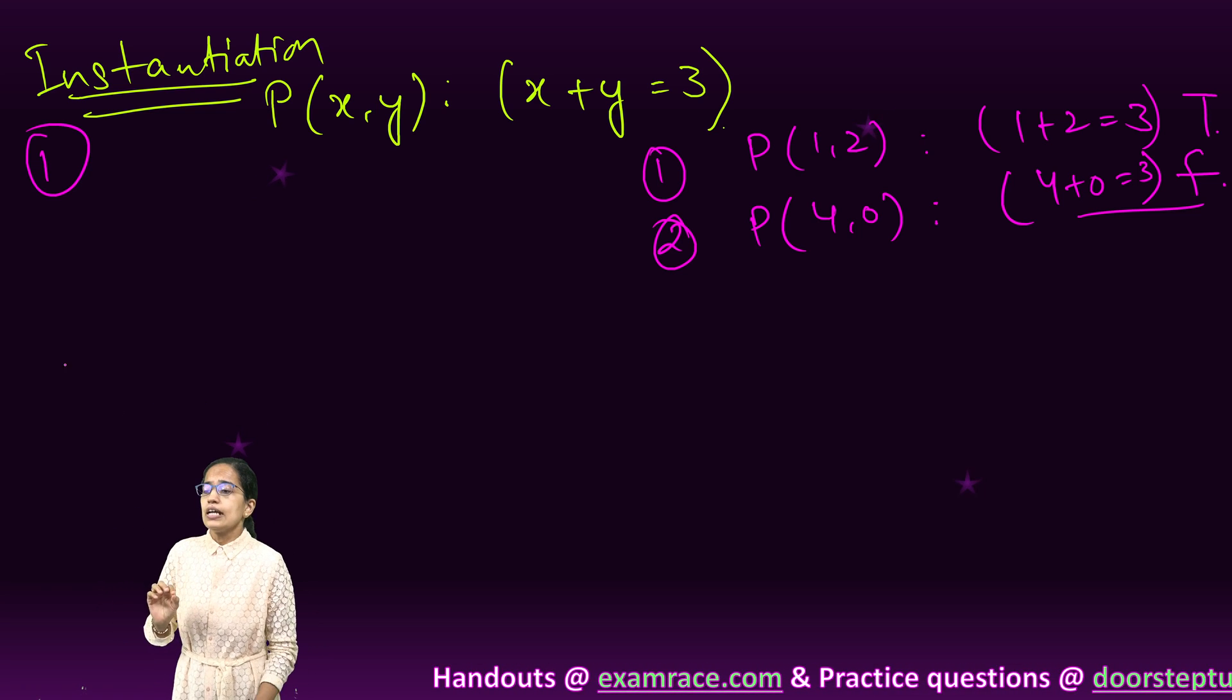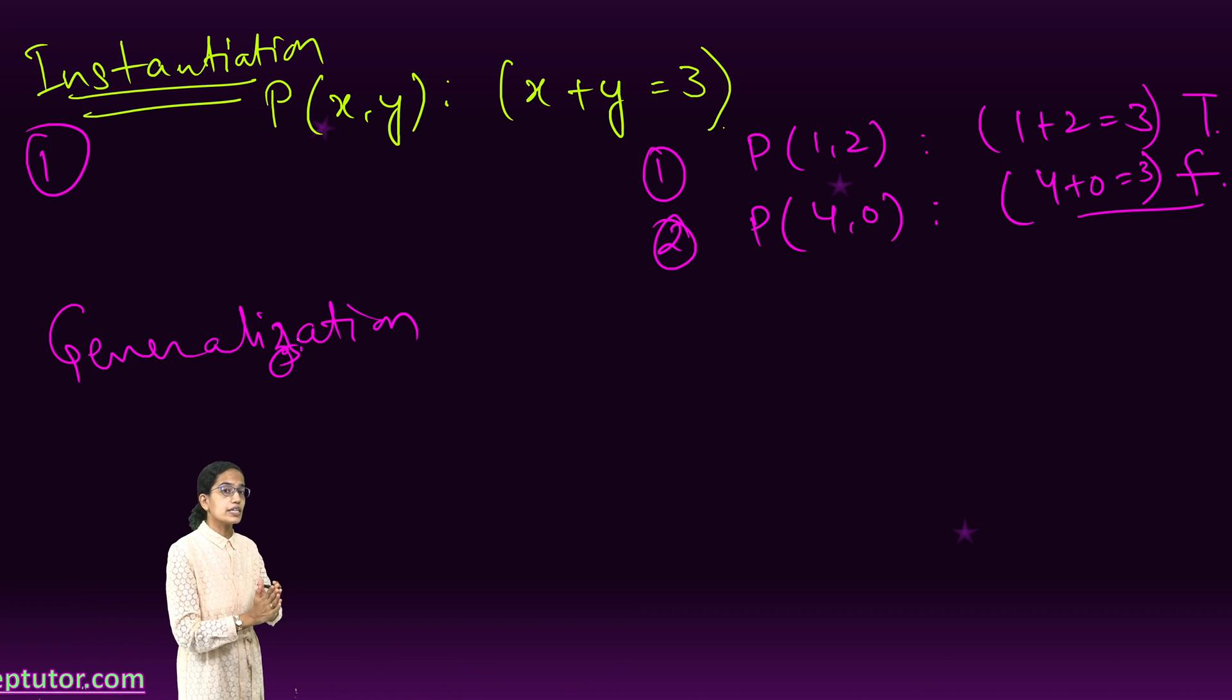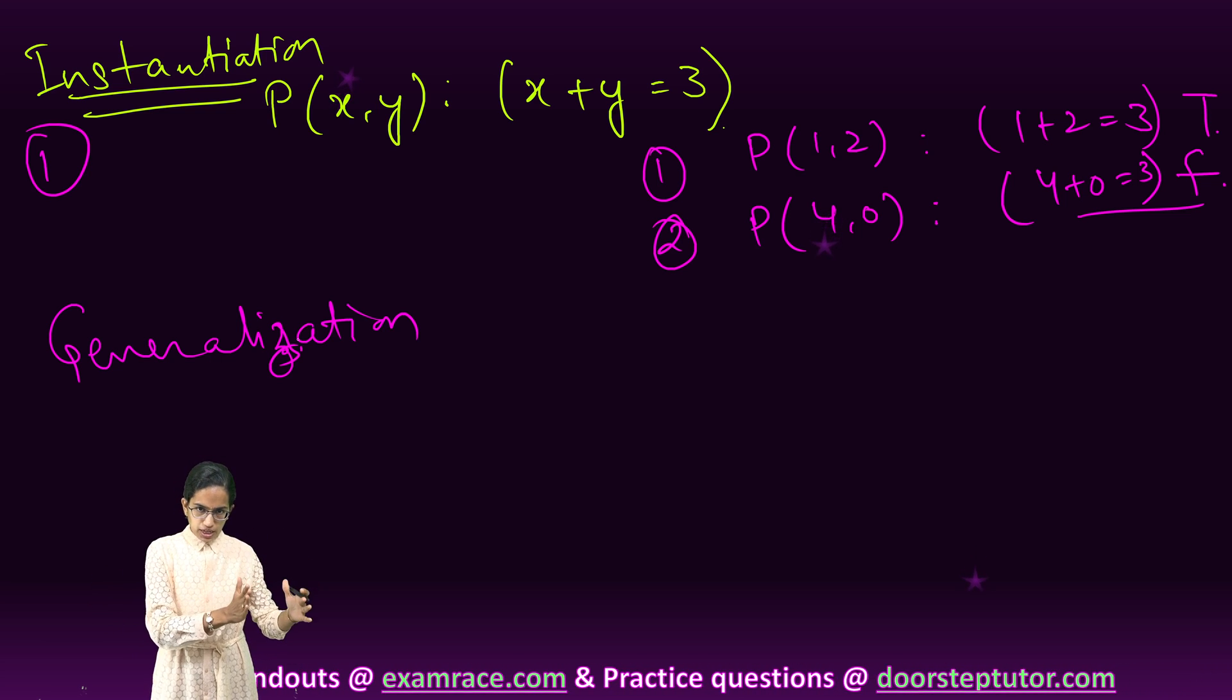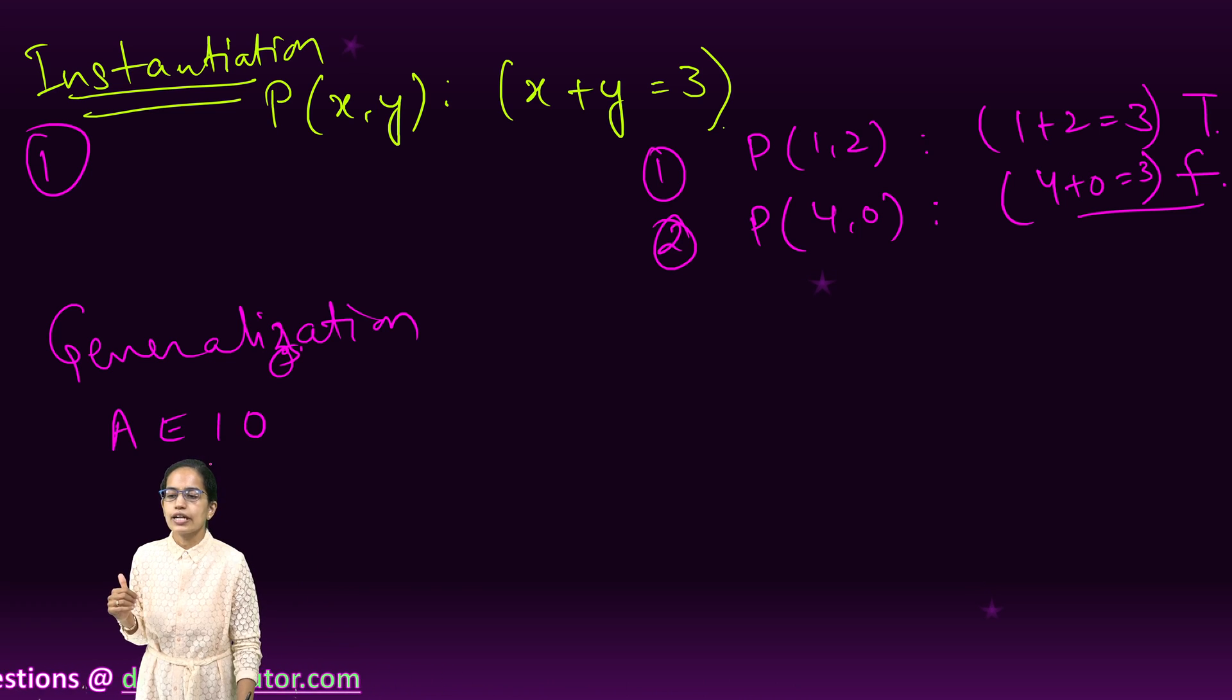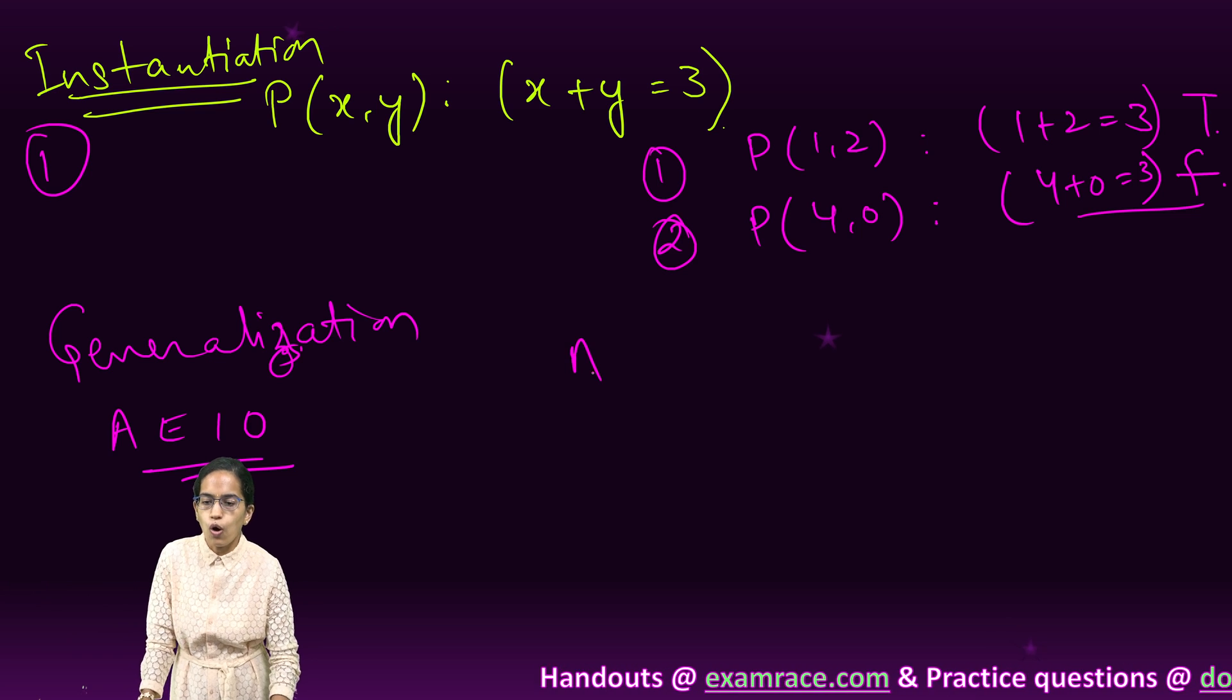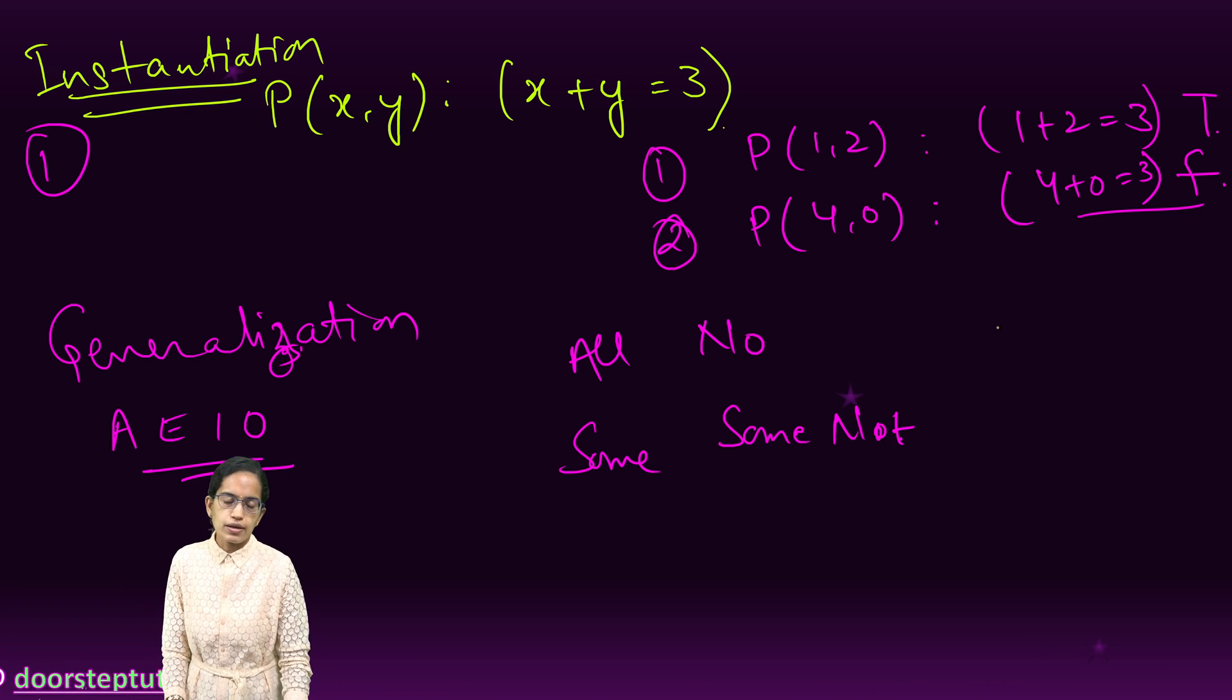The second important concept is generalization. Generalization is similar to what we understood in traditional logic. Predicate calculus is part of modern logic and focuses on generalization: universal and existential. However, traditional logic focused on A, E, I, and O propositions. Here, these traditional logics which were A, E, I, and O - that is all, no, some, and some not - would be represented as part of generalization.